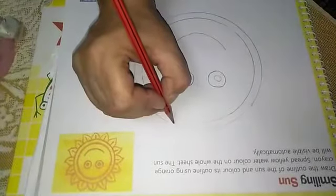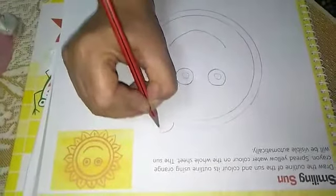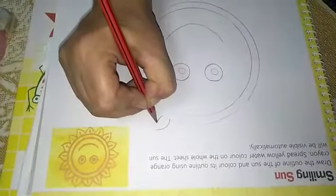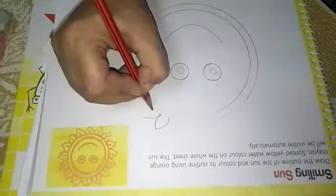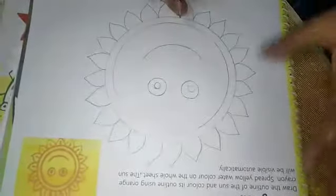Now we will make outer side of our sun as we make flower petals. Firstly one line from this side, then from this side. Like this way complete full circle. Ok beta, this one shape is ready.